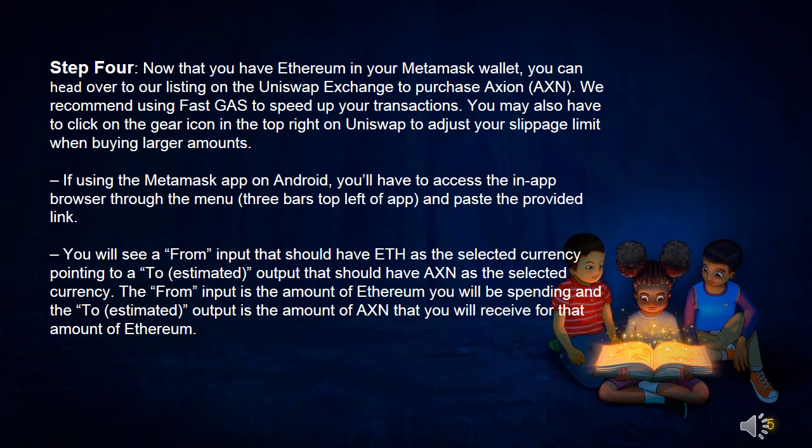If using the Metamask app on Android, you'll have to access the in-app browser through the menu — 3 bars top left of app — and paste the provided link. You will see a 'from' input that should have ETH as the selected currency, pointing to an estimated output that should have AXN as the selected currency. The 'from' input is the amount of Ethereum you will be spending, and the estimated output is the amount of AXN that you will receive for that amount of Ethereum.